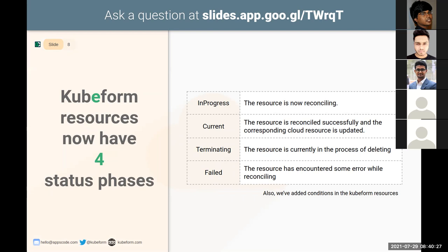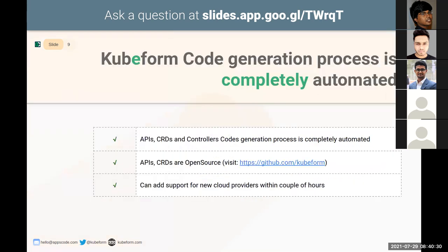We have also added conditions in Kubeform resources. We built a generator library that automates the code generation process for Kubeform, so API CRDs and controller code are completely automated and the API CRDs are open source. You can visit github.com/kubeform/provider for those APIs and CRDs. Because the code generation process is fully automated using Terraform provider resources, adding a new cloud provider to Kubeform has become much easier — we can add support for a new cloud provider within a couple of hours without rewriting everything from scratch.